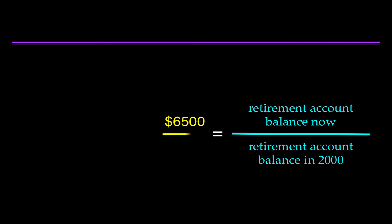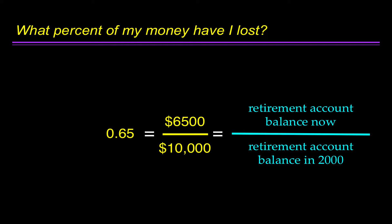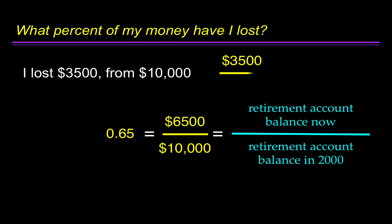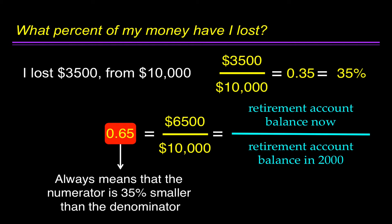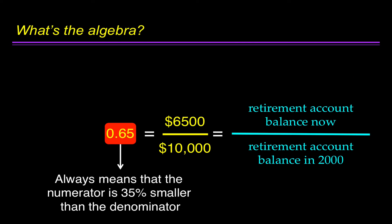Let's say my account balance now is $6,500 and it was $10,000. That produces a ratio of 0.65. What percent of my money have I lost? I've lost $3,500 — that's $10,000 minus $6,500 — from $10,000, so $3,500 over $10,000 is 0.35, or 35%. But that information is contained in the ratio of 0.65. A ratio of 0.65 always means the numerator is 35% smaller than the denominator. The algebra: 1 minus 0.65 equals 0.35, or 35%.